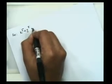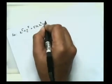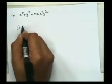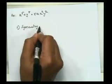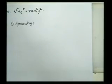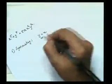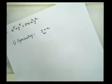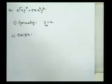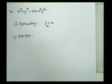Similarly, we can analyze the equation x⁵ + y⁵ = 5ax²y². First point: symmetry. This curve is symmetric about y = x line because there is no change in the equation if x and y are interchanged, so symmetry is about y = x. Second point, origin: in this equation there is no constant term, meaning the curve passes through the origin.